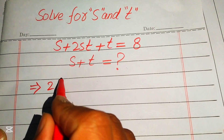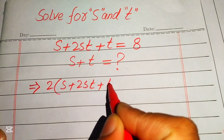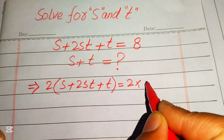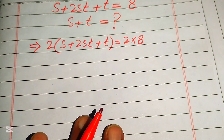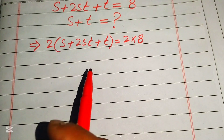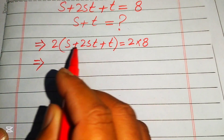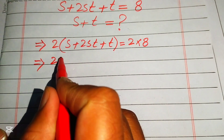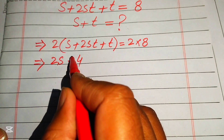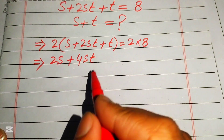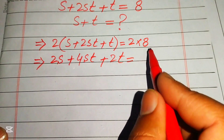Multiplying both sides by 2 gives us: 2 times (s squared plus 2st plus t) equals 2 times 8. Distributing the 2 gives us 2s squared plus 4st plus 2t equals 16.